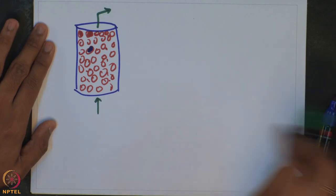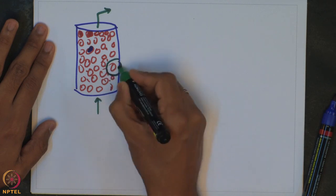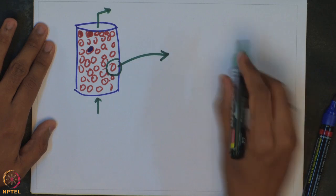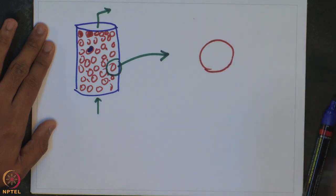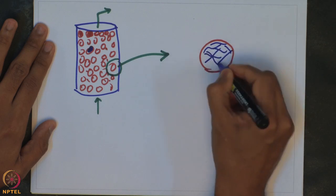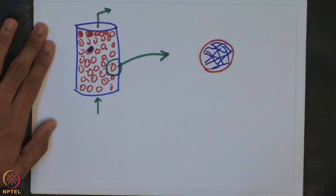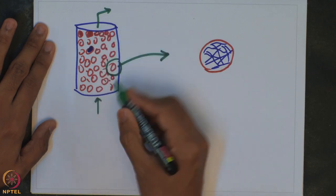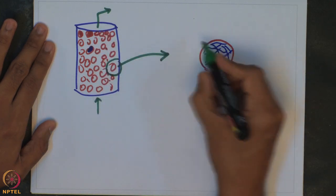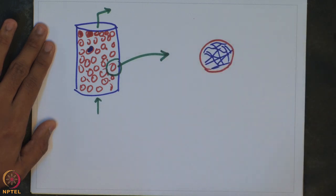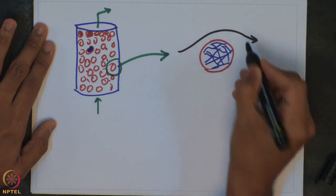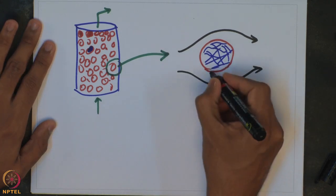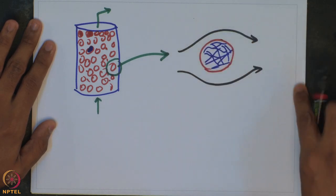Let us now zoom and see what happens close to a catalyst pellet. Let us say that we have a catalyst pellet here, which has a lot of pores inside, and the reaction is happening in the active surface available close to the pores. Now when the fluid is actually flowing through the reactor, very close to the catalyst pellet, the fluid is actually flowing past the object.